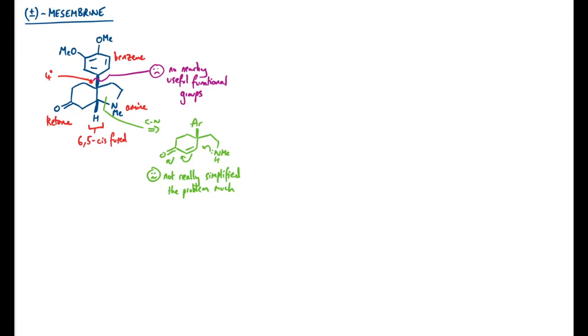Another key trick in retrosynthesis is to identify that we've actually got two useful functional groups: the ketone and the amine. So we should look at what the functional group relationship is between them — how many carbons they're separated by. Here we can see that's one, two, three. So we have a 1,3-difunctionalized compound, and for me that's a trigger for using enolates. I think this is a good way forwards.